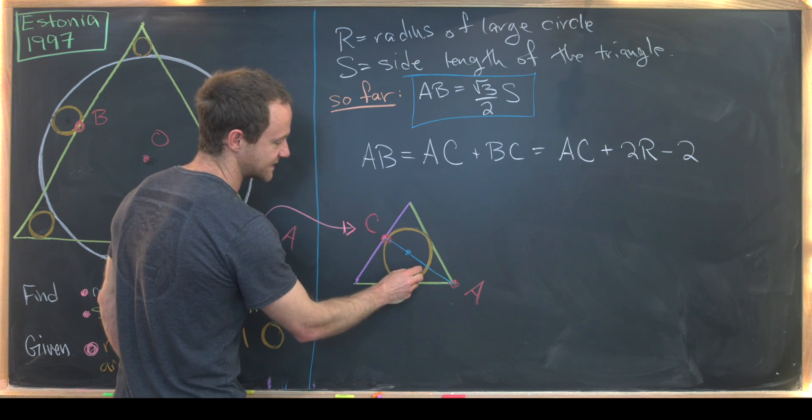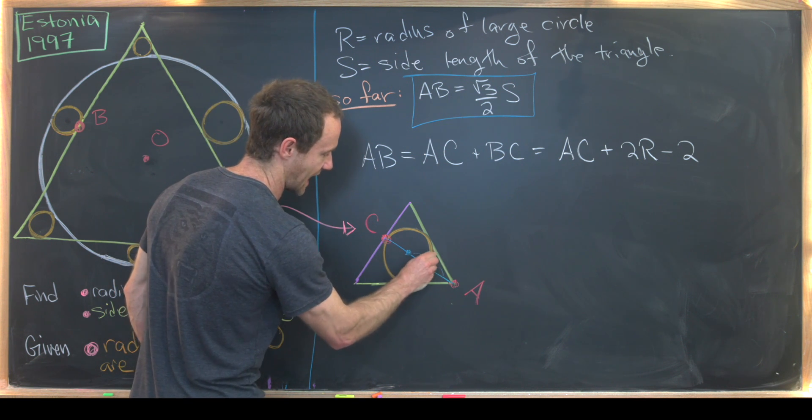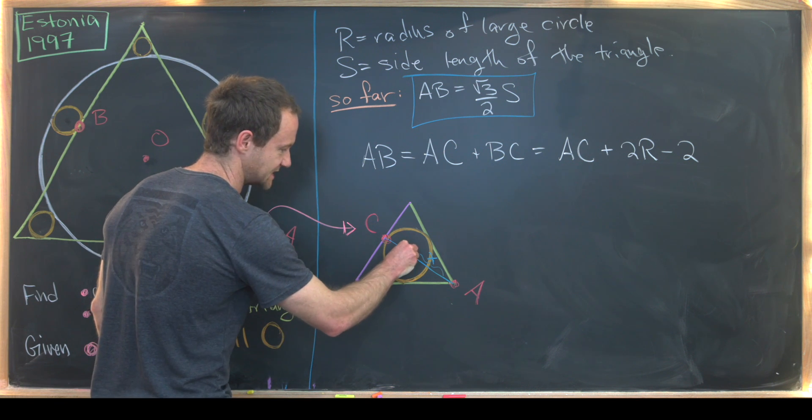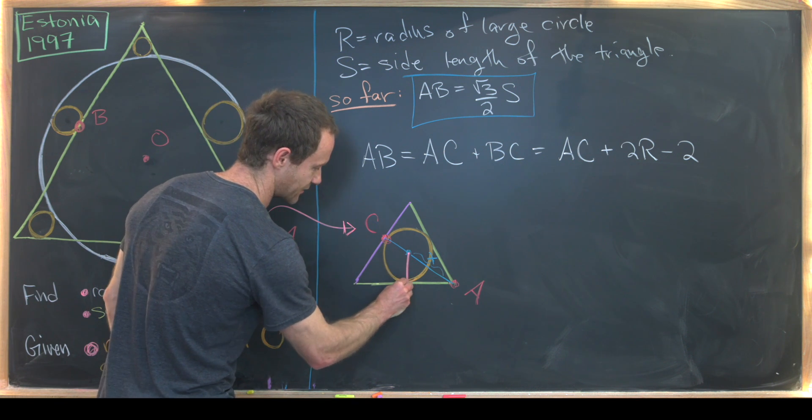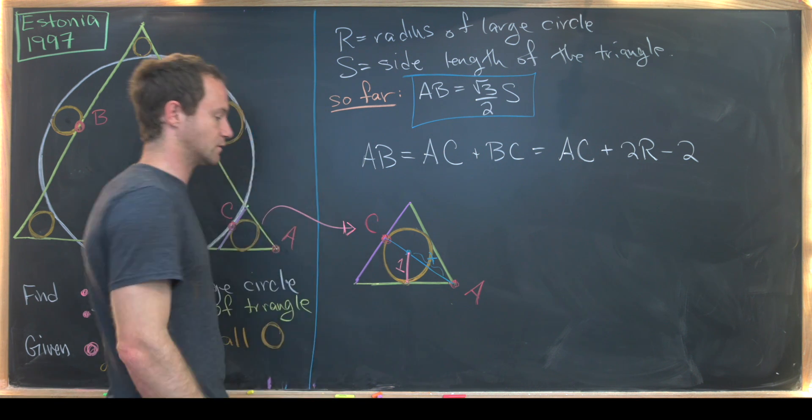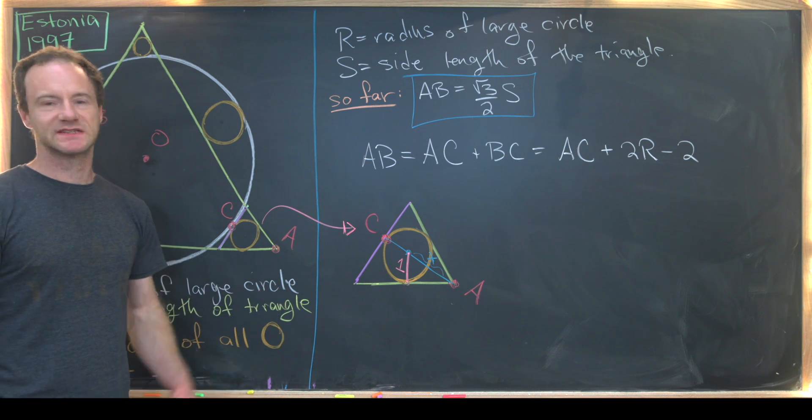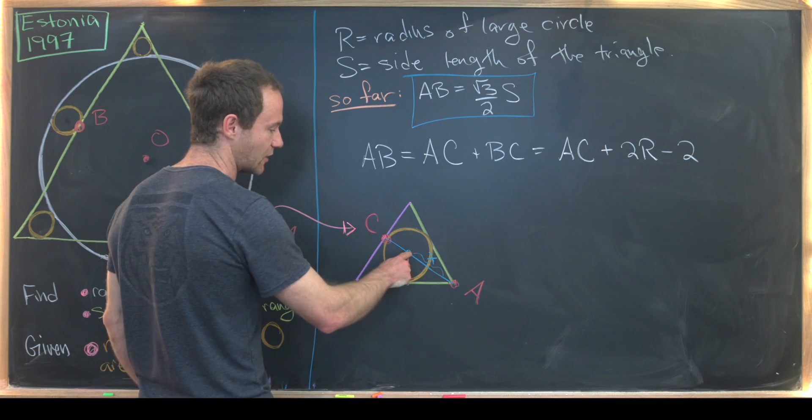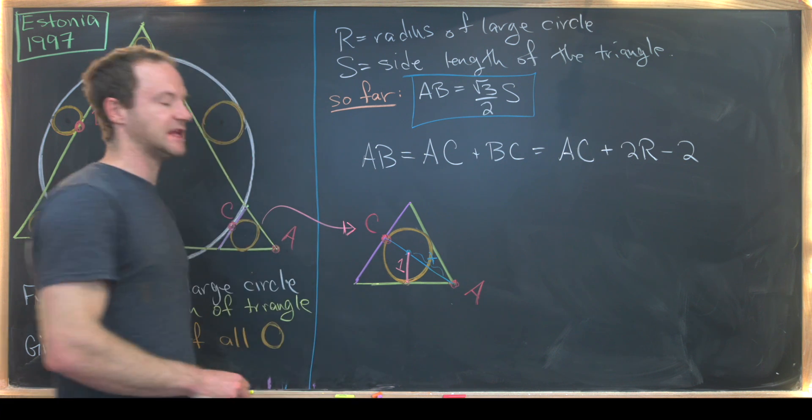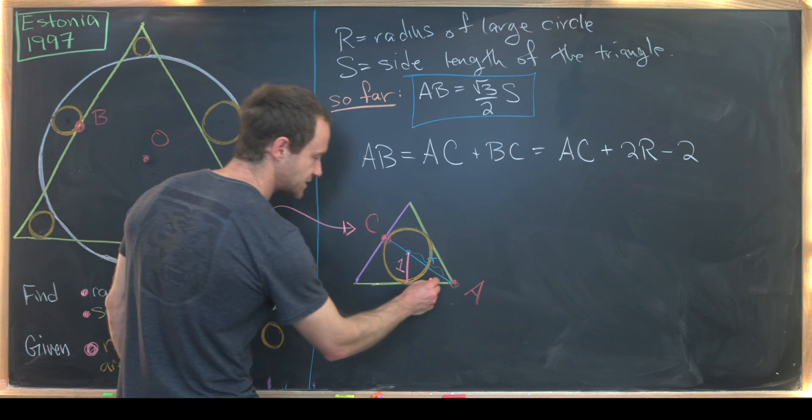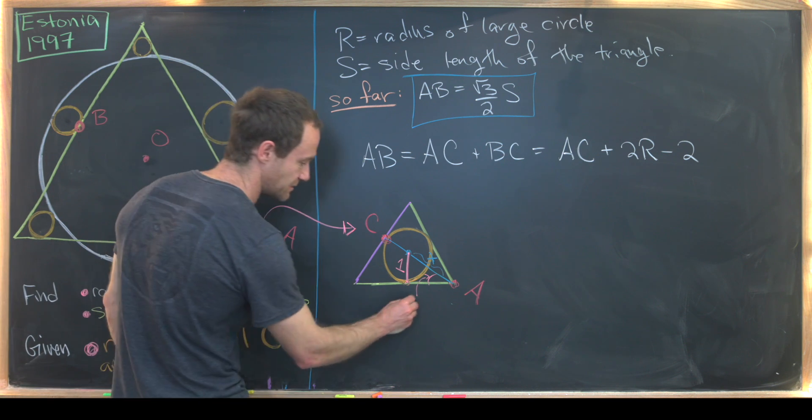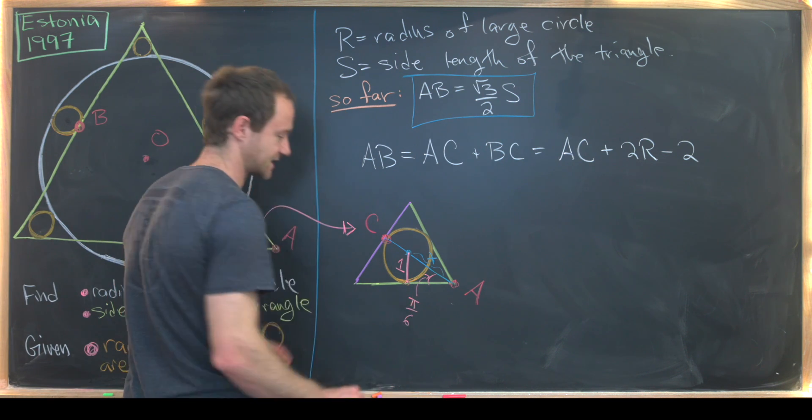But now here's some other facts we know. If we drop a line segment from this center down here, we know that side length is one. We know that because that's a radius of the circle. Next, this is an angle bisector of an angle of an equilateral triangle. So we know the measurement of this angle, that's going to be π over six. Finally, we know sine π over six is going to be equal to one over X because sine is opposite over hypotenuse.